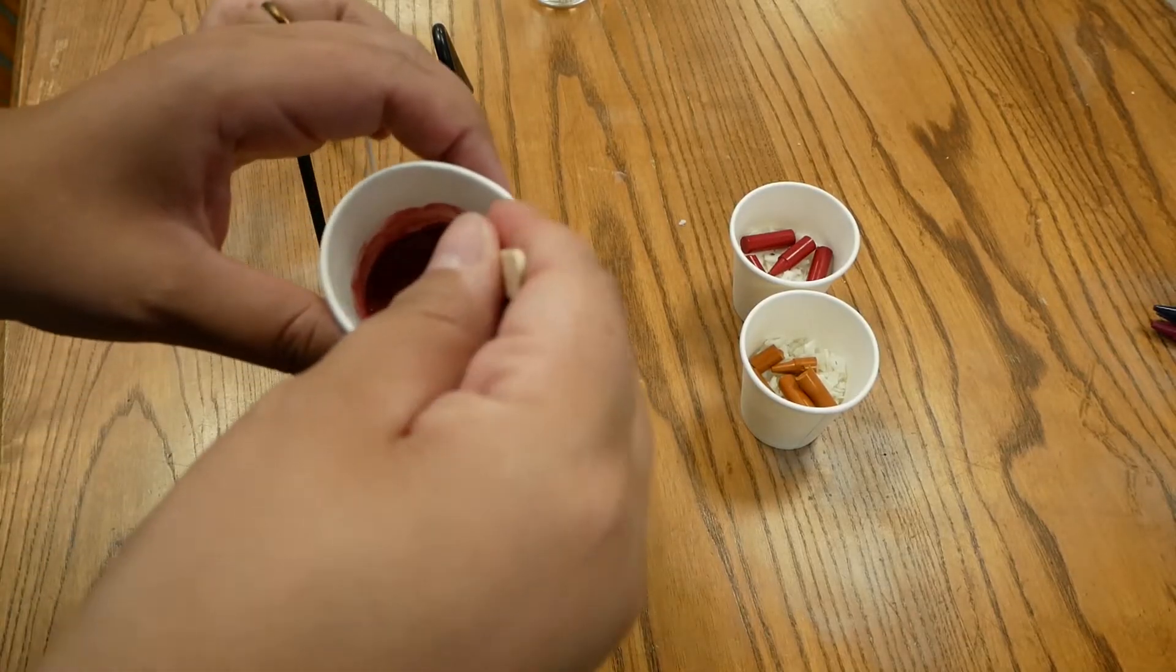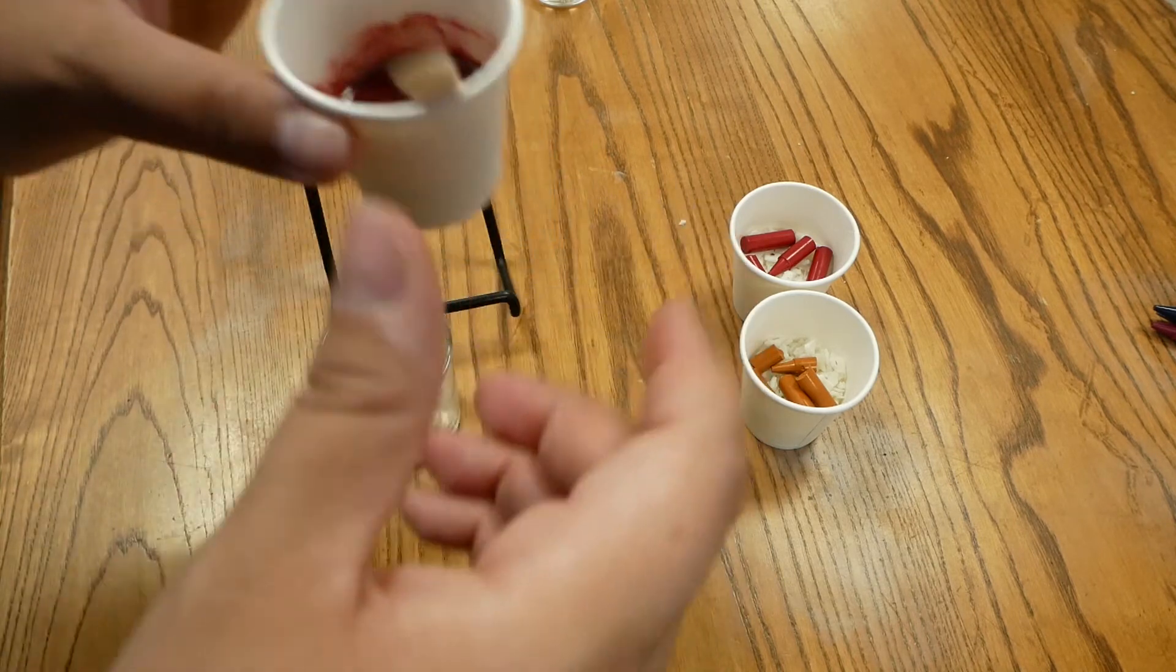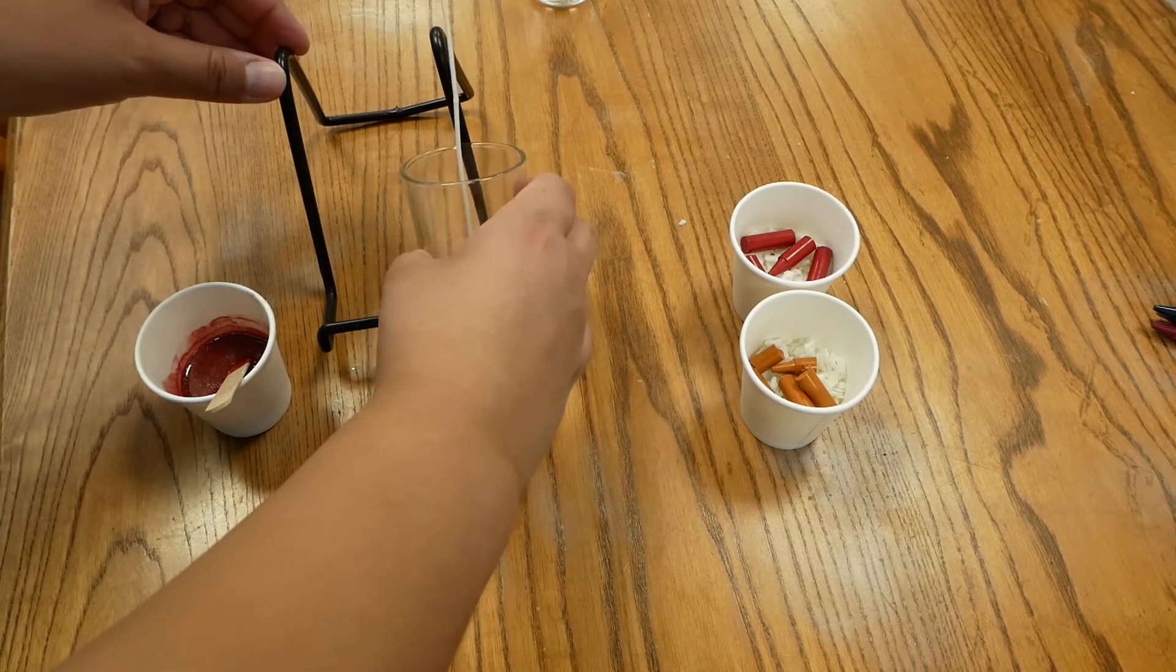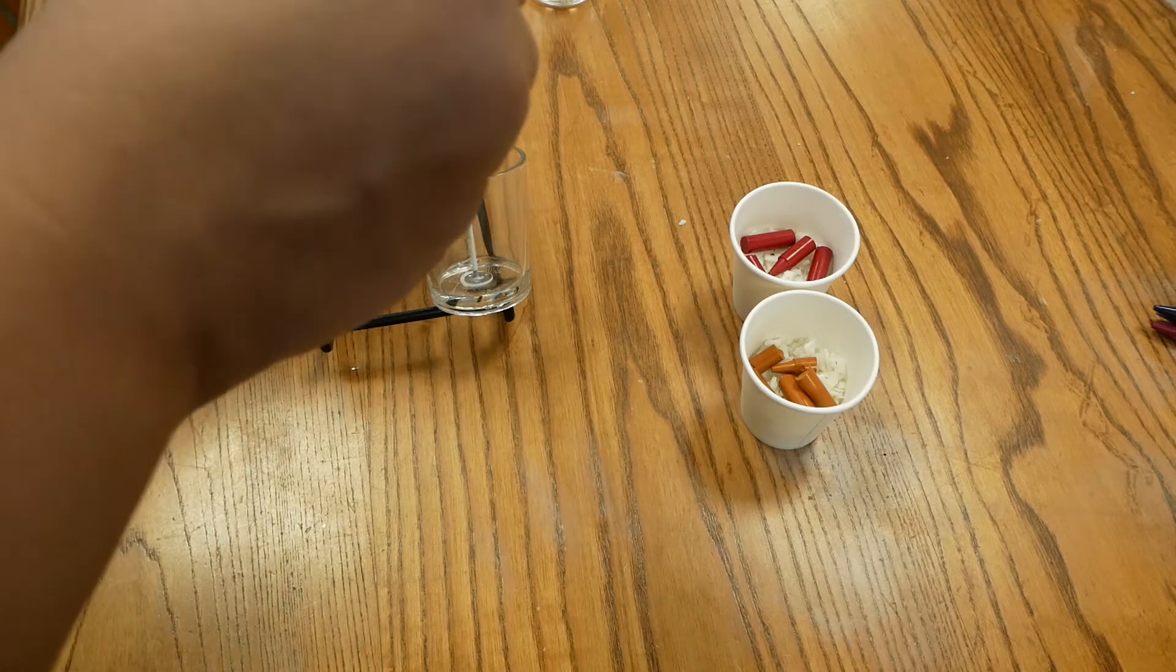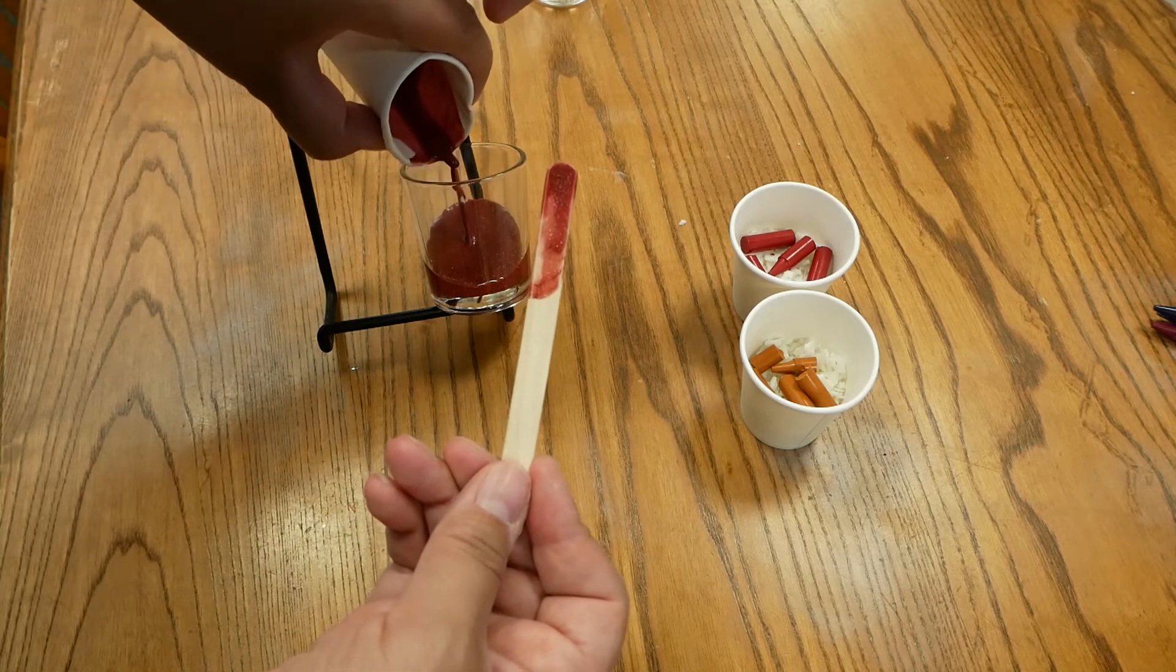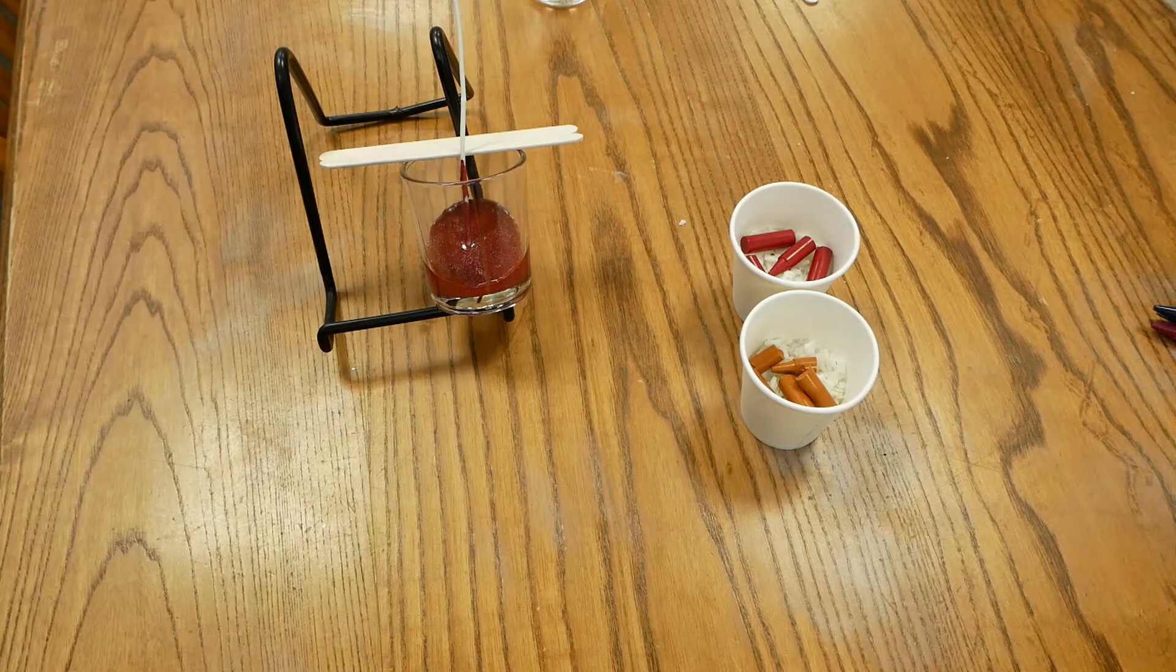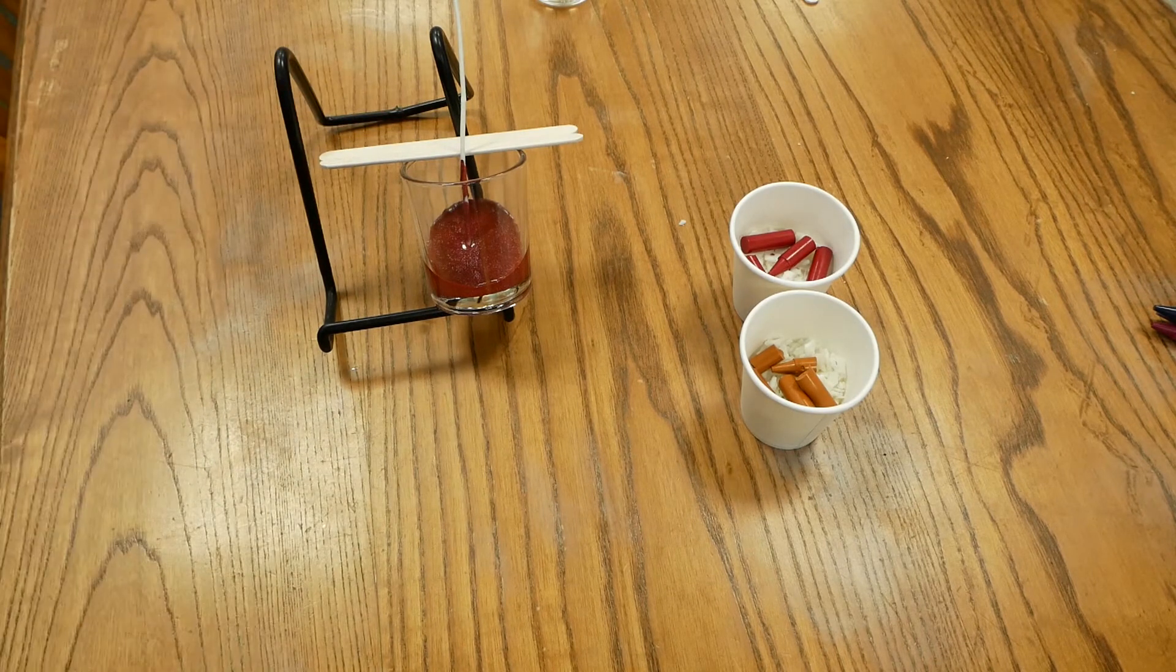Mix the wax and the crayon together again. Then put your votive on your leaning surface and carefully pour the wax into one side. You can use your spare popsicle sticks to hold up the wick in the middle of the votive so it doesn't lean over.